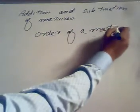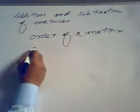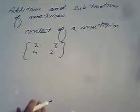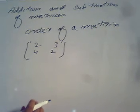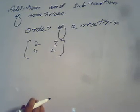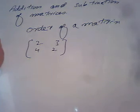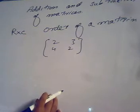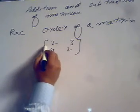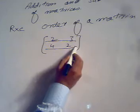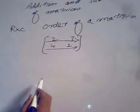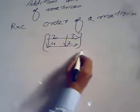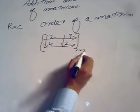Suppose we have a matrix like [2, 3; 4, 2] and we want to find its order. We calculate the number of rows and the number of columns, then write it in the form R cross C, where R means row and C means column. Here we have two horizontal lines — these are called rows — and two vertical lines — these are called columns. So the order of that matrix is 2 cross 2.